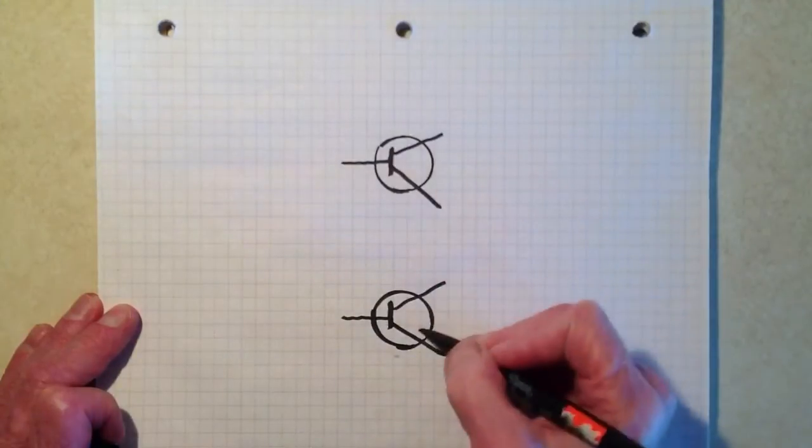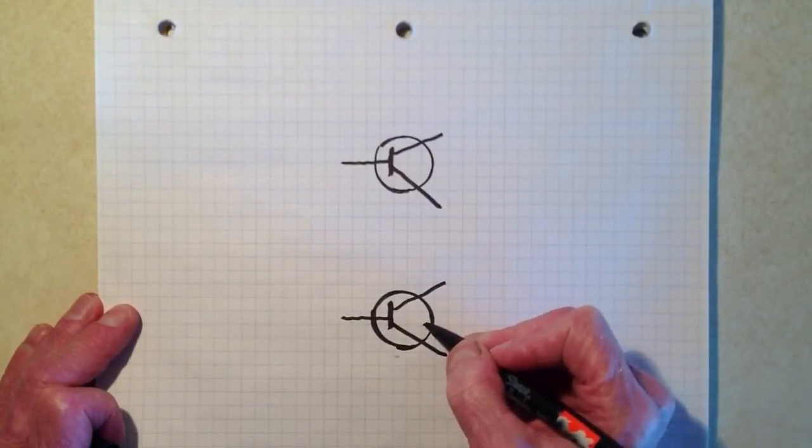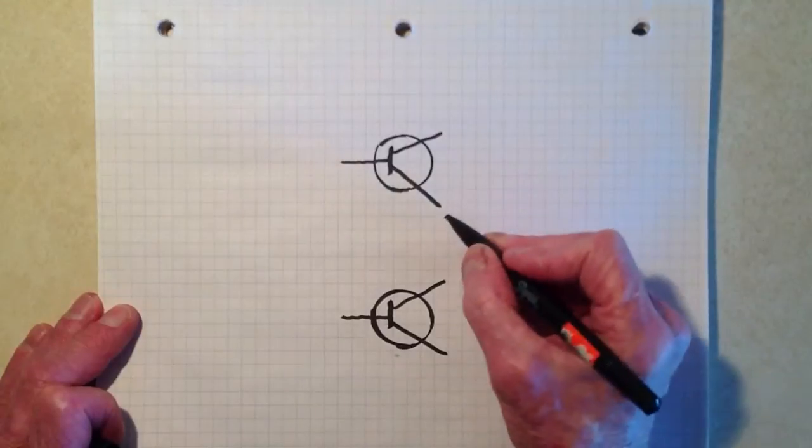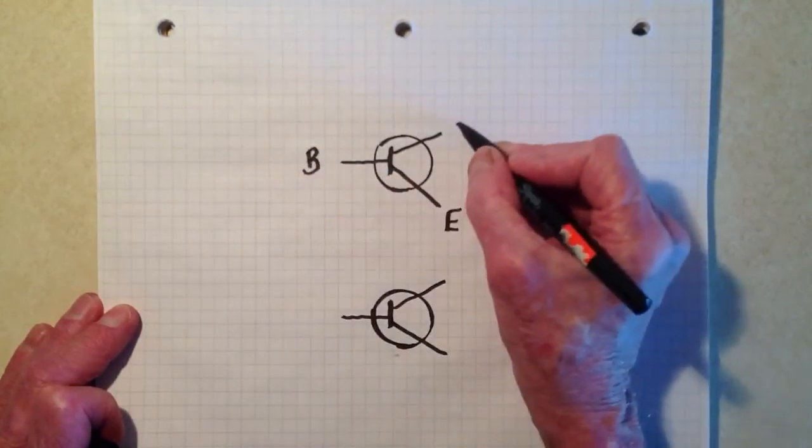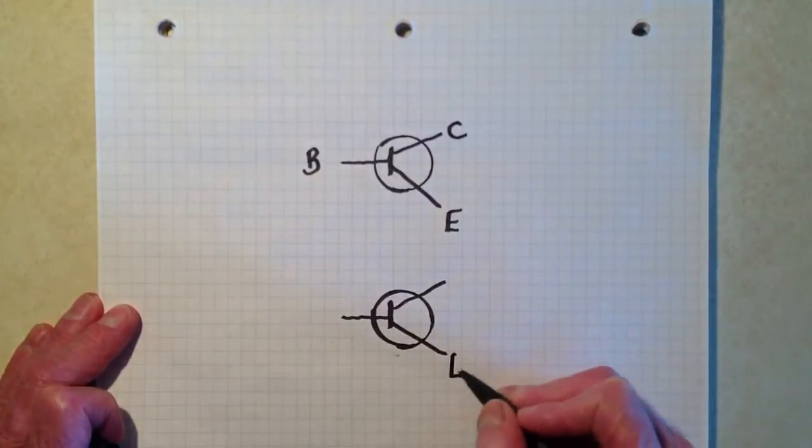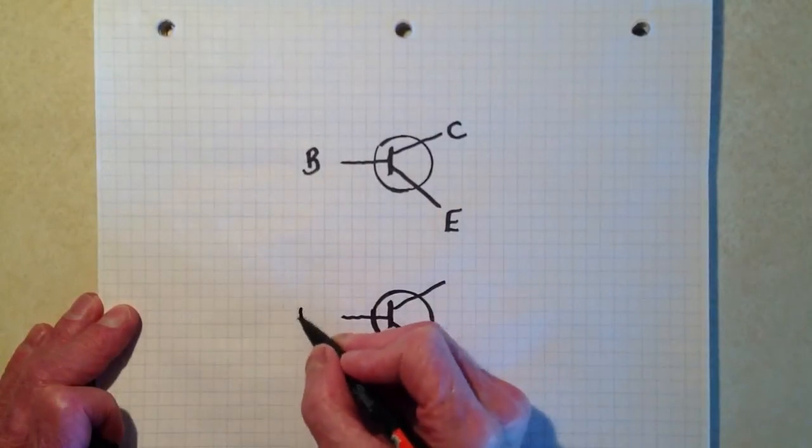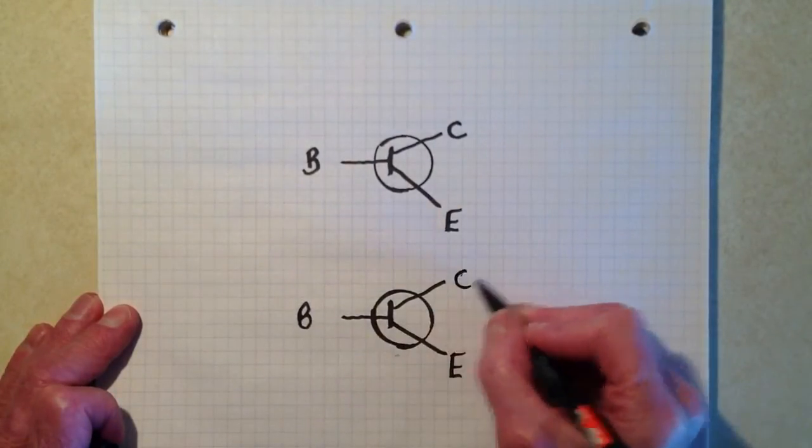This is the basic bipolar transistor symbol. Emitter, base, collector. Emitter, base, collector.